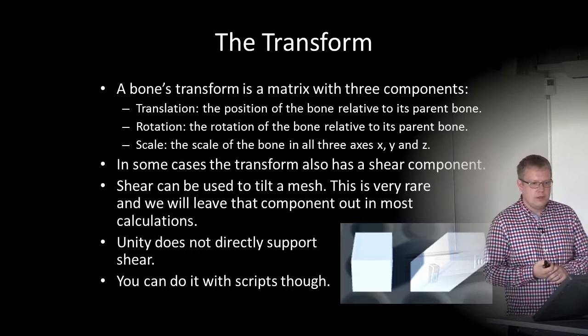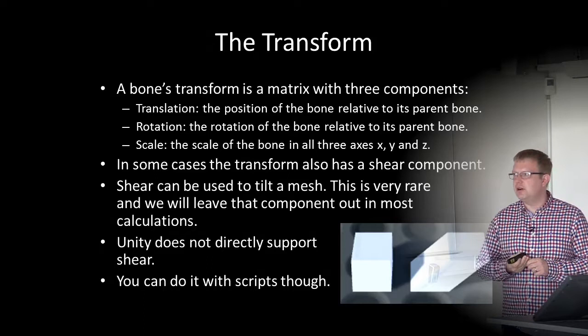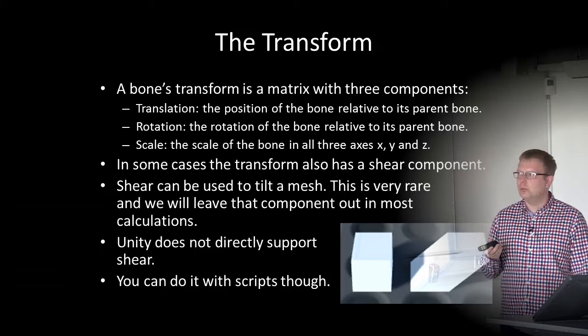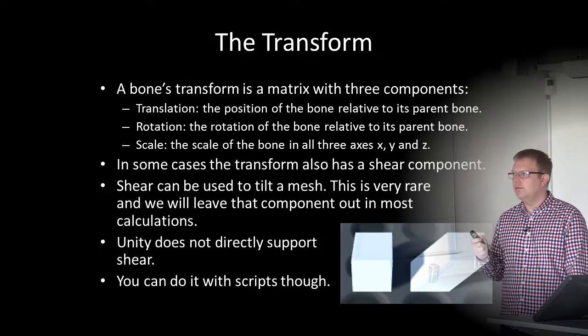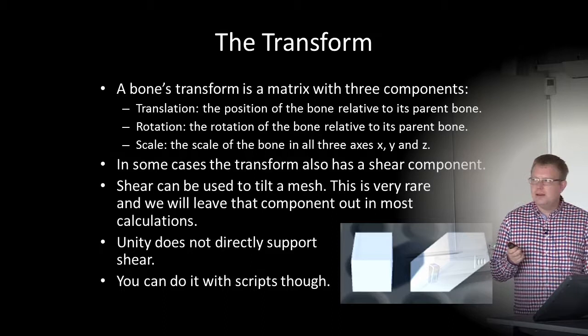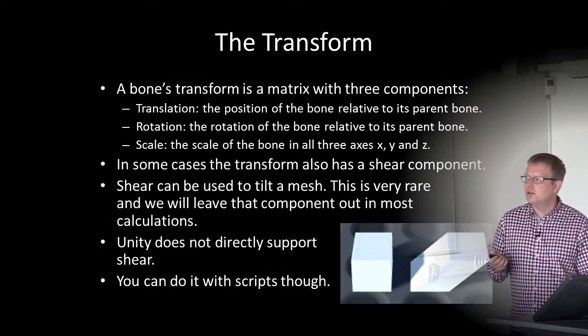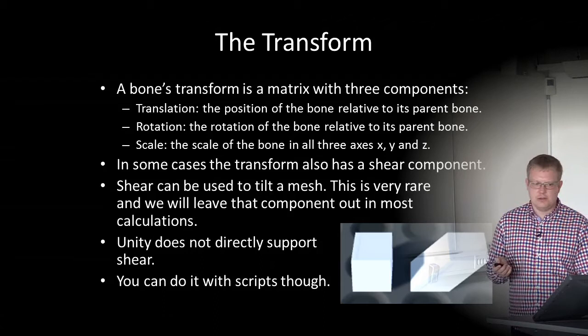A bone's transform is a matrix with three components: translation for the position of a bone relative to its parent in x, y, and z; rotation of a bone relative to its parent in x, y, and z axes; and scale of the bone in all three axes. In some literature there's a fourth component called shear, which can be used to tilt a mesh — but this is very rare. Unity does not directly support shear. In most character animations, bones cannot scale either, so we can often leave scale out, keeping only translation and rotation.